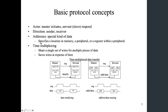We can use addresses to specify a location in memory, a peripheral, or a register within a peripheral. For some cases, if we do not have a lot of wires, we may have to reuse the wire for different purposes. This is a good example of time multiplexing — the goal is to share a single set of wires for multiple pieces of data.